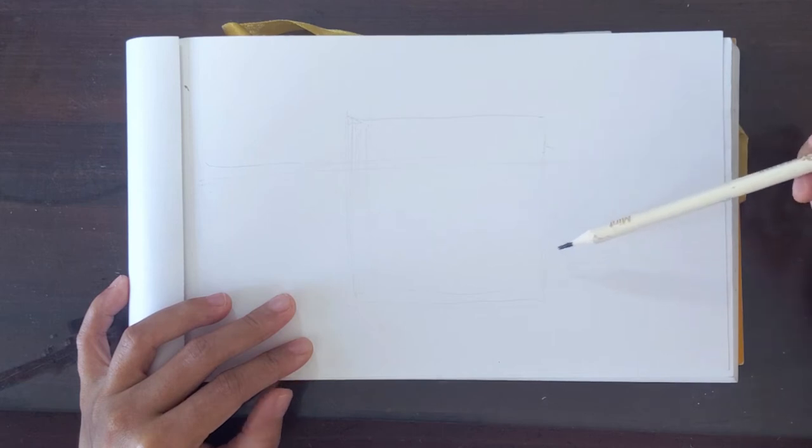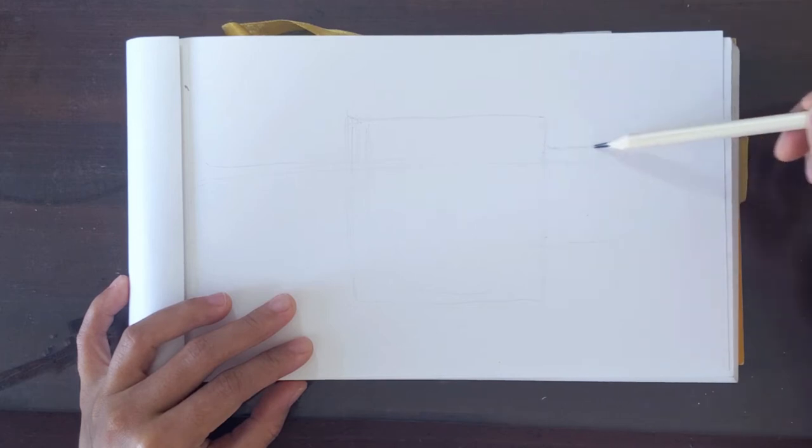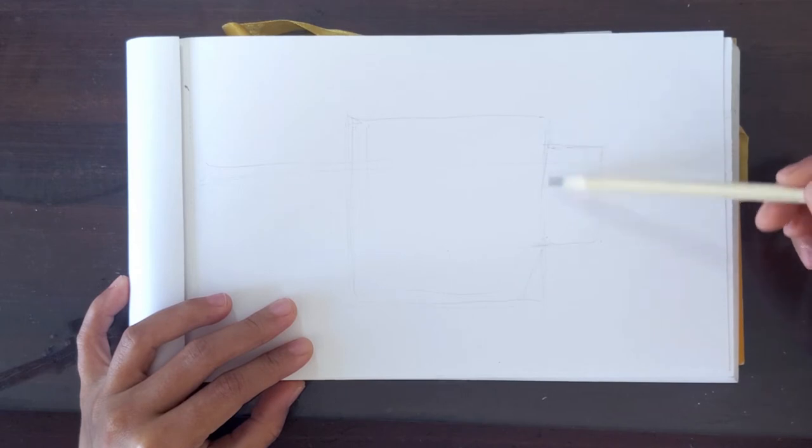After that, we will draw a rectangle beside the big square. Next, we will begin to draw the sides of the cup.